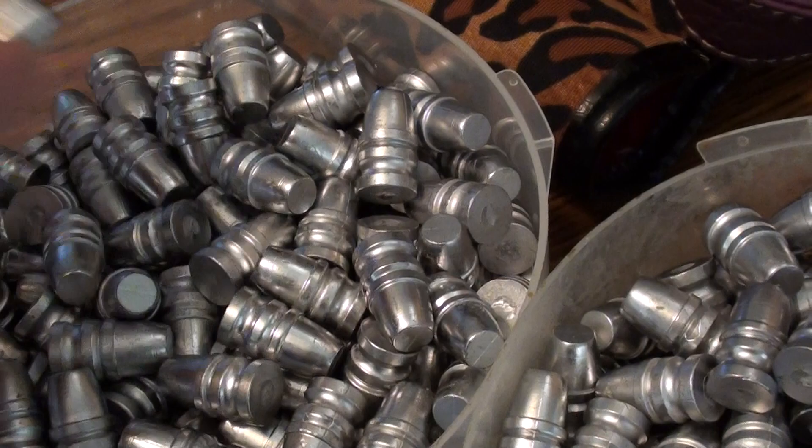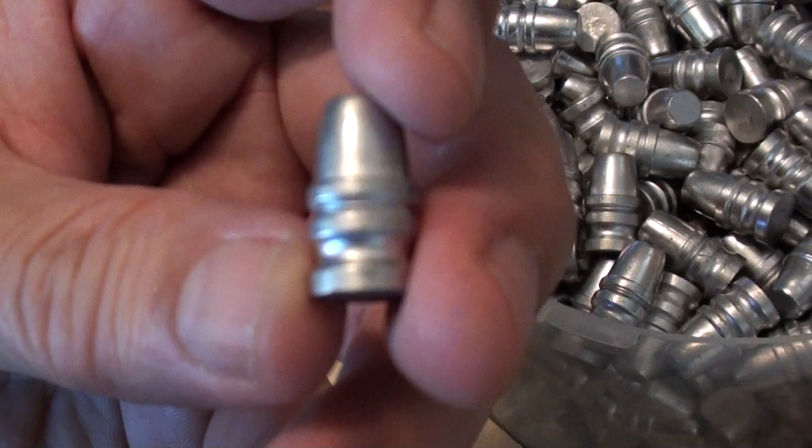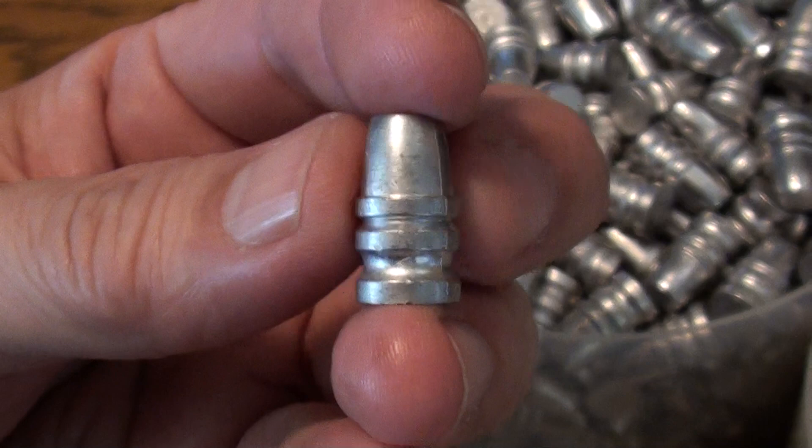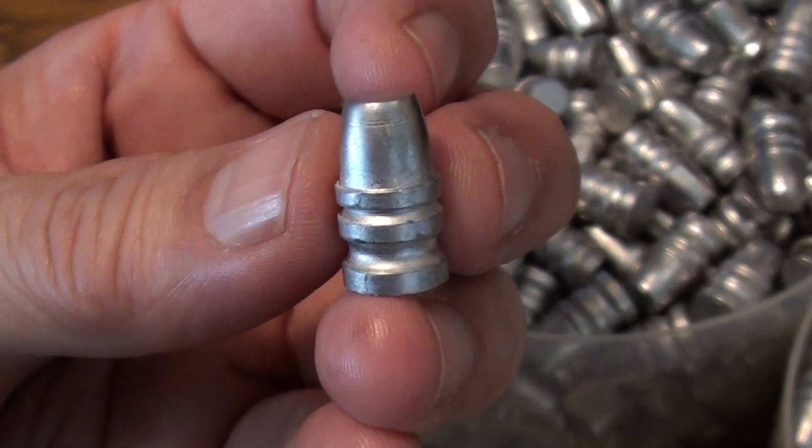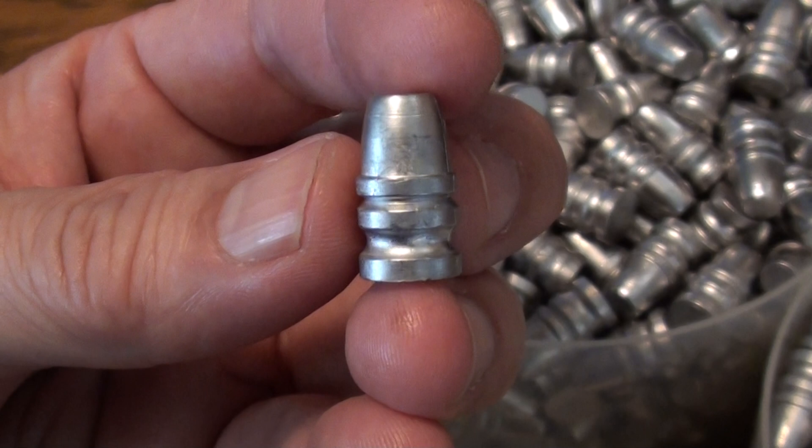He designed bullets for Magnum revolvers, and the calibers that he designed bullets for was the .357 Magnum, the .41 Magnum, the .44 Magnum, and the .45 Colt. Now we'll talk about the .44 Magnum caliber here because this is what this is.